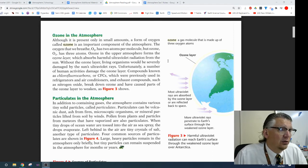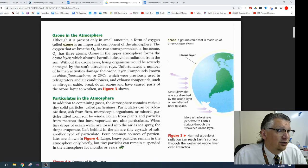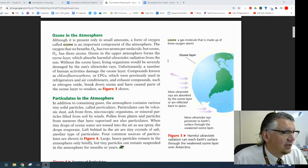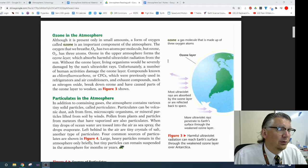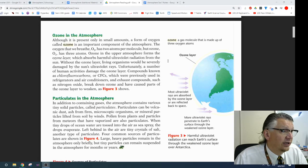Without the ozone layer, living organisms would be severely damaged by the sun's ultraviolet rays. Unfortunately, a number of human activities damage the ozone layer. Compounds known as chlorofluorocarbons, or CFCs, which were previously used in refrigerants and air conditioners, and exhaust compounds such as nitrogen oxide, break down ozone and have caused parts of the ozone layer to weaken, as shown in Figure 3.